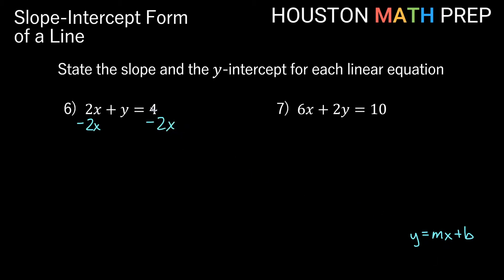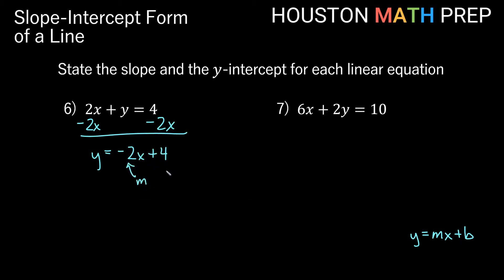Because it's mx plus b form, instead of writing 4 minus 2x, I'm going to write the x term in front and then the number after. So y equals negative 2x plus 4. Now it's in the mx plus b form, so our m is negative 2 and our b is 4.